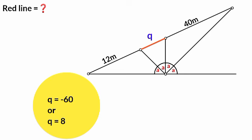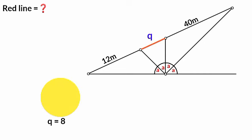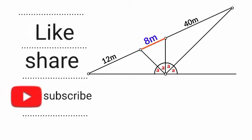Q is the length of the red line and cannot be negative, so minus 60 is ruled out. Therefore Q equals 8 — the length of the red line we were asked to calculate is 8 meters. Thank you for watching. Please subscribe, like, share, comment, and turn on notifications. Thank you.